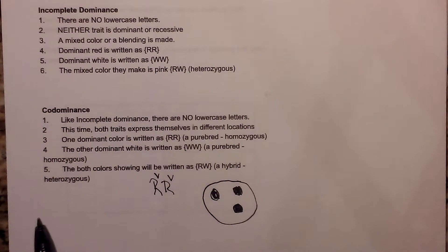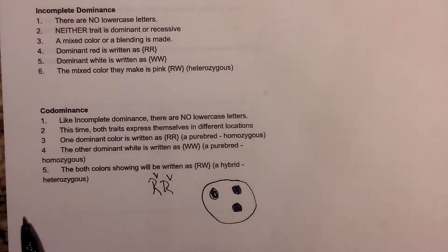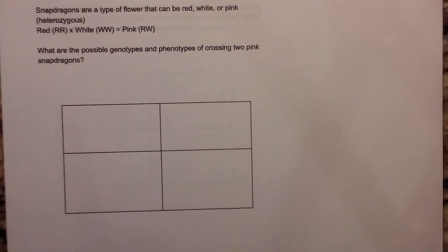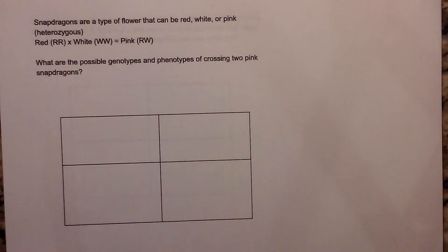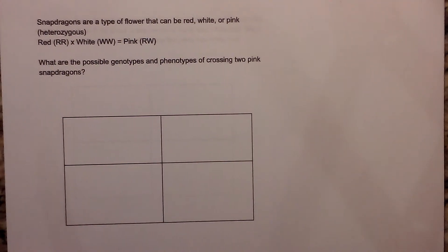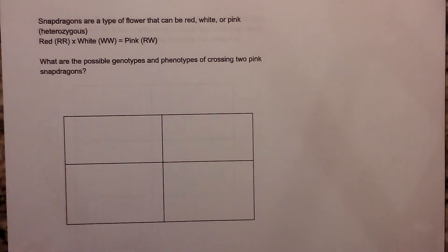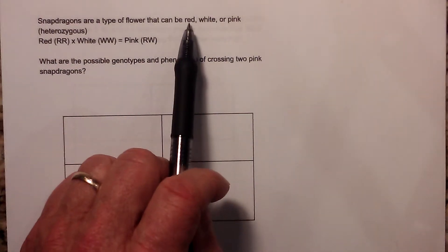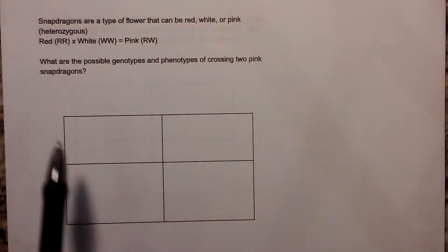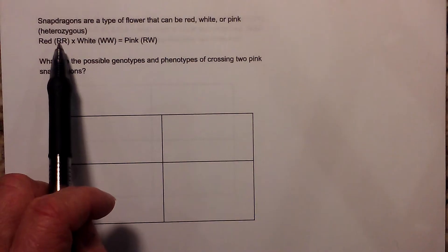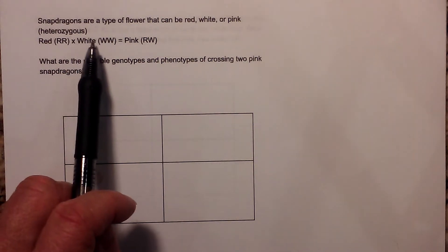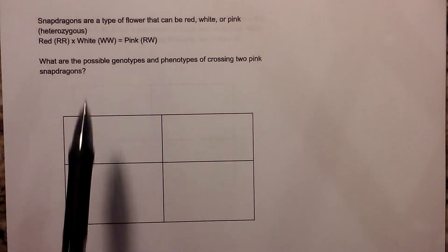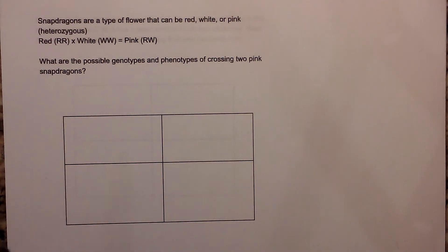So let's work two examples and see if we can't figure this out with Punnett squares. Example one: incomplete dominance. There is a flower called a snapdragon that can be red, white, or pink. Red is written capital R capital R, white is written WW, and pink is written capital R capital W.